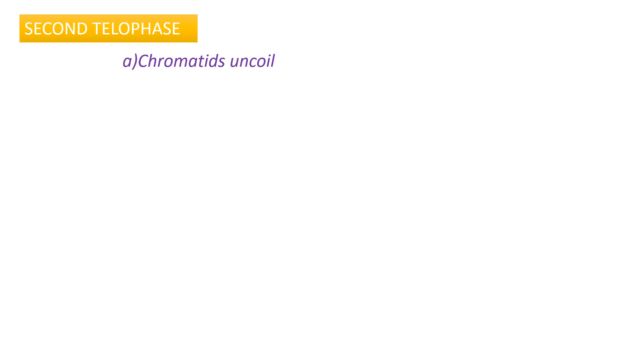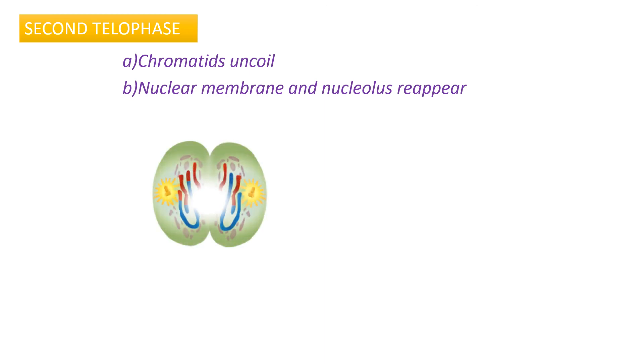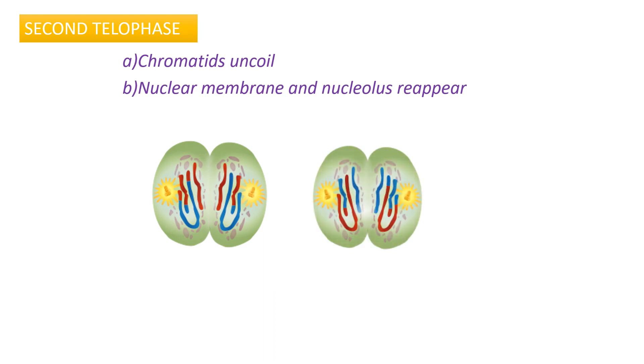The fourth stage of meiosis II is telophase II. During this stage, the chromatids that have separated and reached the opposite poles coil into chromatin material, and the nuclear membrane and nucleolus reappear around the divided chromatids. With this, the second nuclear division is completed.